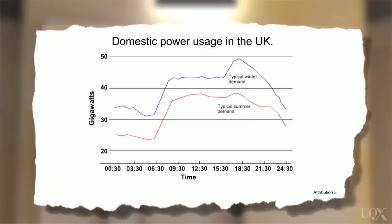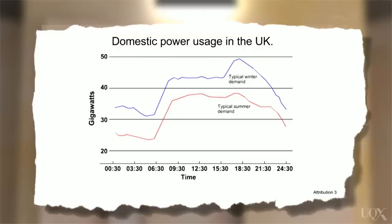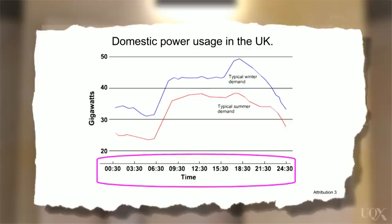The next visual we'll look at is the line graph, which is used to show changes over time. We should look at the title first — it's about the use of power in the UK. The word 'domestic' means that the data is only about people's homes. Like the bar chart, this visual also has two axes. The vertical axis shows gigawatts — a unit of power — and the horizontal axis shows time using a 24-hour clock, with midnight at the beginning and end of the axis, and midday in the middle.